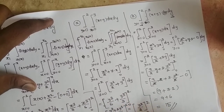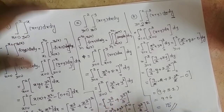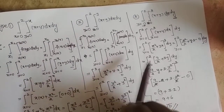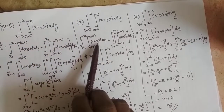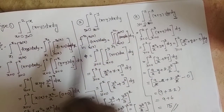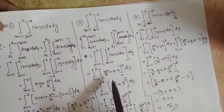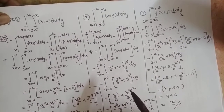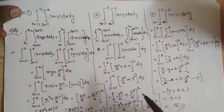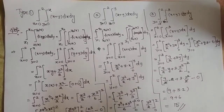So these are the three types — Type 1, Type 2, Type 3 — with limits, for evaluation of the double integral. For more videos, please subscribe to my channel. Thank you.